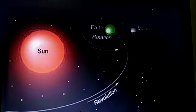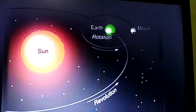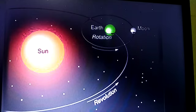This orbit takes the oval shape. The same is the Moon, where it revolves around the Earth in a smaller oval orbit.